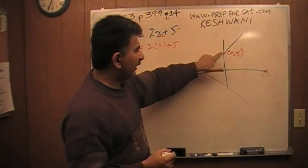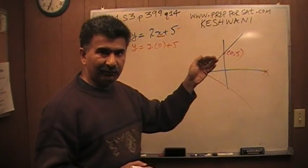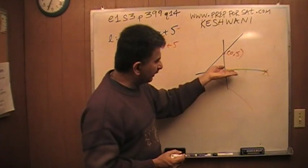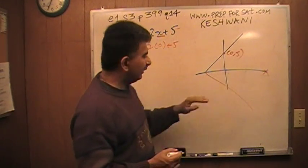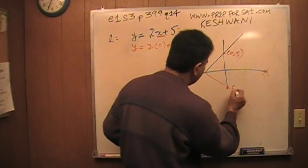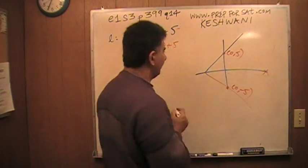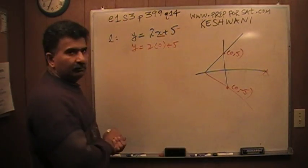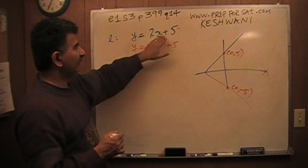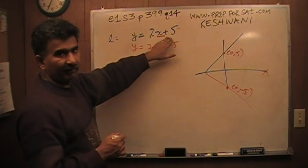When x is 0, y is 5, which means the reflection of that line along the x-axis, if you were to hold a mirror here, the reflection that you will see will have to go through (0, -5), which means whatever the correct answer is has to have a negative 5 here. When x is 0, this has to be negative 5. Let's look at the answer choices.